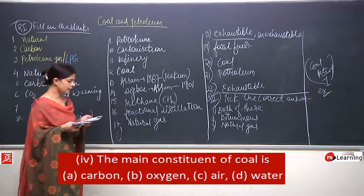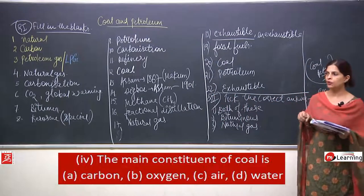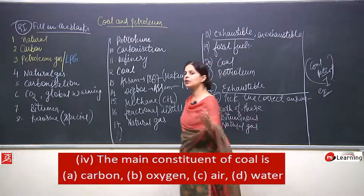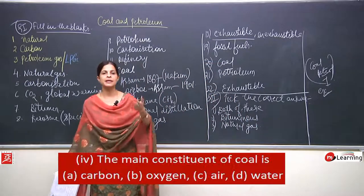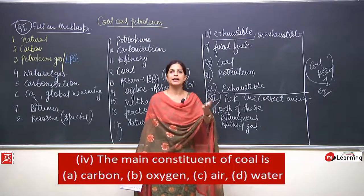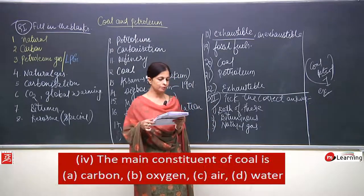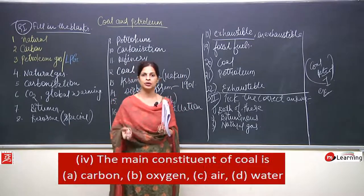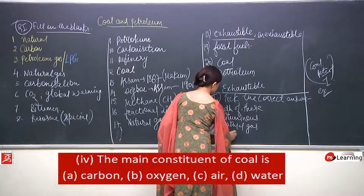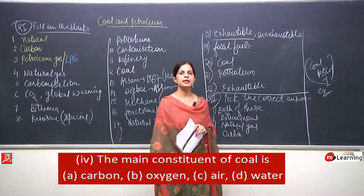The fourth MCQ: the main constituent of coal is dash. Coal is formed from plants buried millions of years ago under layers of sand, under high pressure and high temperature, in absence of oxygen. The main constituent of coal is carbon.